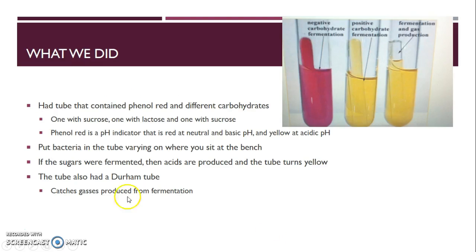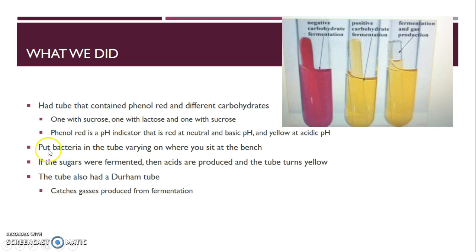For this experiment, we had tubes containing phenol red and different types of carbohydrates: one with glucose, one with lactose, and one with sucrose. Phenol red is a pH indicator. At neutral and basic pH, it is red, and at acidic pH, it turns yellow. So if acid is produced, the tube turns yellow.